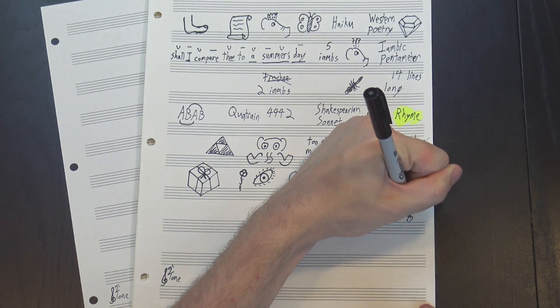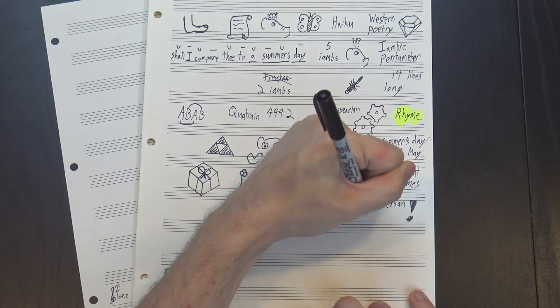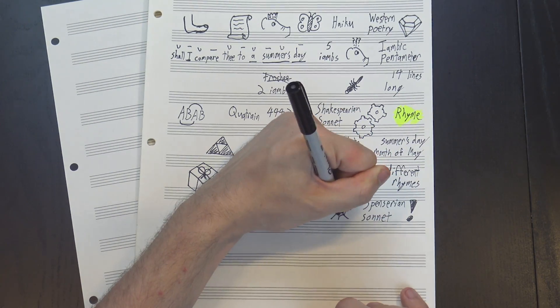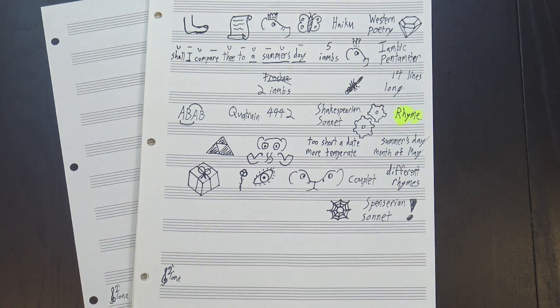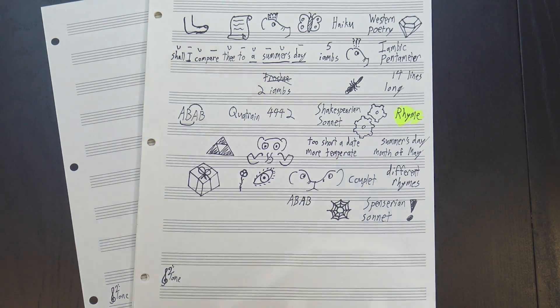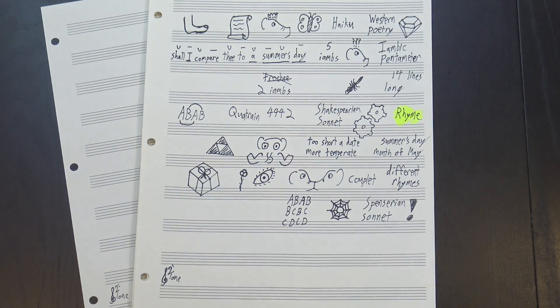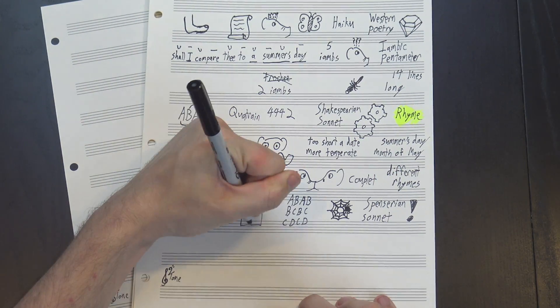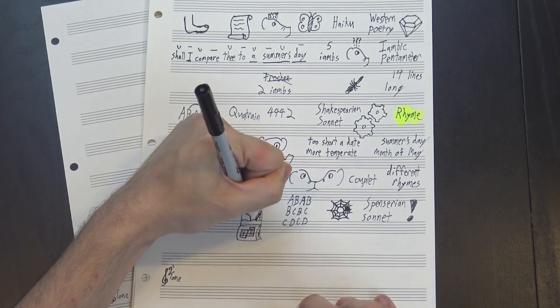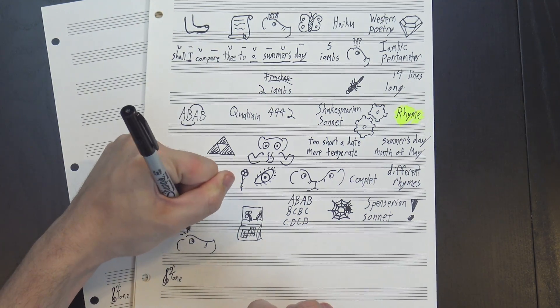But that's not the only rhyme scheme you might find in a sonnet. One of my favorites is the Spenserian sonnet, which is a lot like the Shakespearean one, but a little more connected. Each of the quatrains still takes the form A-B-A-B, but in addition to that, the first line also rhymes with the last line of the previous quatrain. So if sonnet 18 were a Spenserian sonnet, the first and third lines of the second quatrain would have to rhyme with date. It's not, though, so they don't.